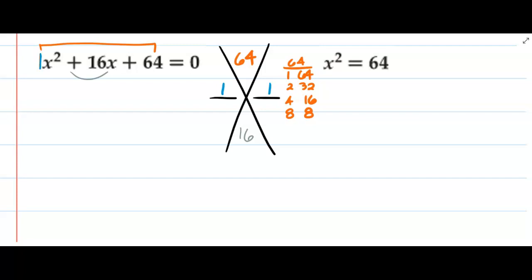Because when we put those in, 8 times 8 is 64, 8 plus 8 is 16. These give us our factors, so we end up with 1x + 8.